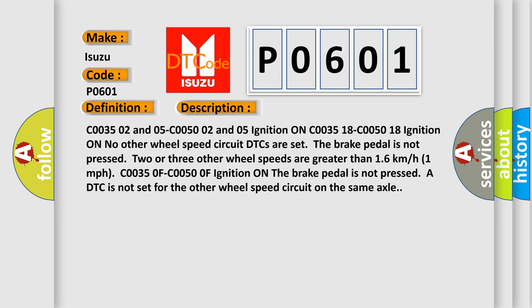C0035 02 and 05, C0050 02 and 05: Ignition ON, C0035 18, C0050 18 Ignition ON, no other wheel speed circuit DTCs are set. The brake pedal is not pressed. Two or three other wheel speeds are greater than 1.6 km/h (1 mph). C00350F, C00500F: Ignition ON, the brake pedal is not pressed. A DTC is not set for the other wheel speed circuit on the same axle.